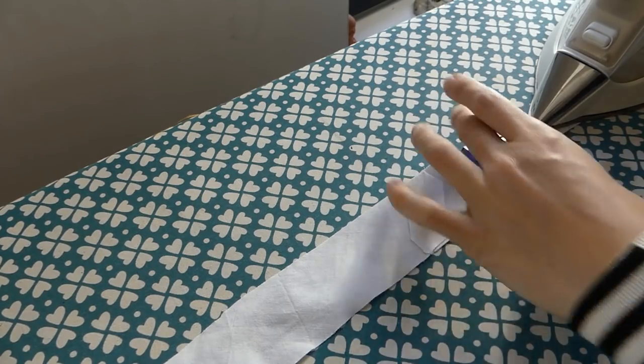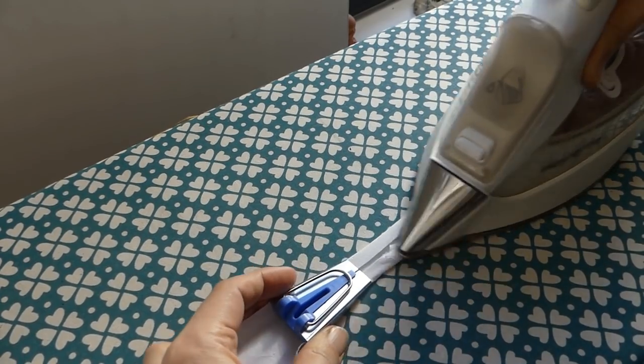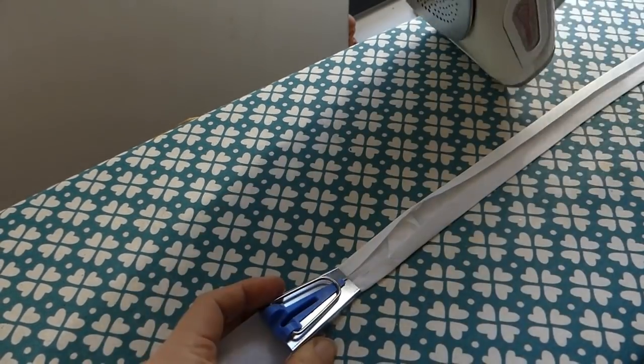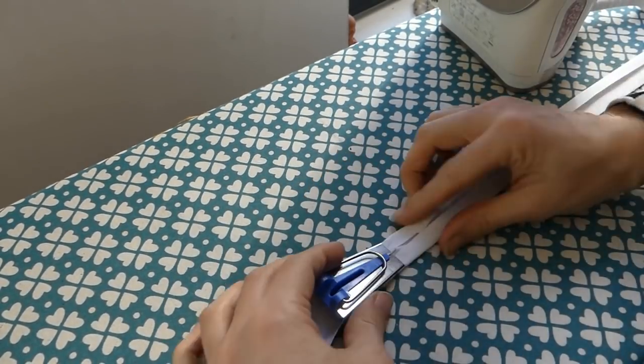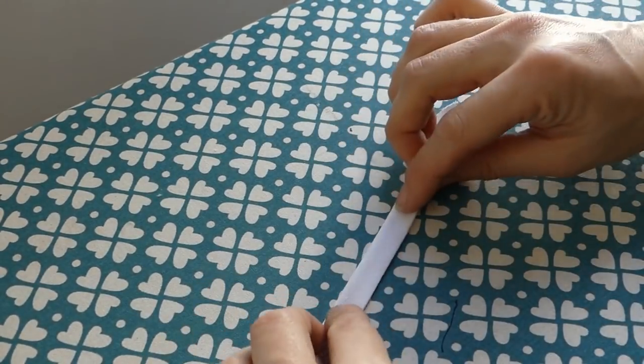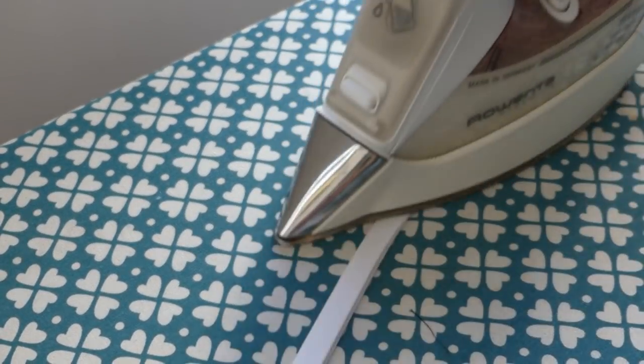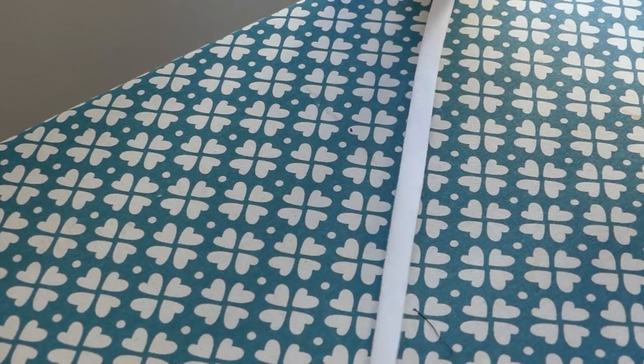And when you come to a seam, don't worry, just pull and iron. And if you want double fold bias tape, just fold the bias tape in half and press with your hot iron.